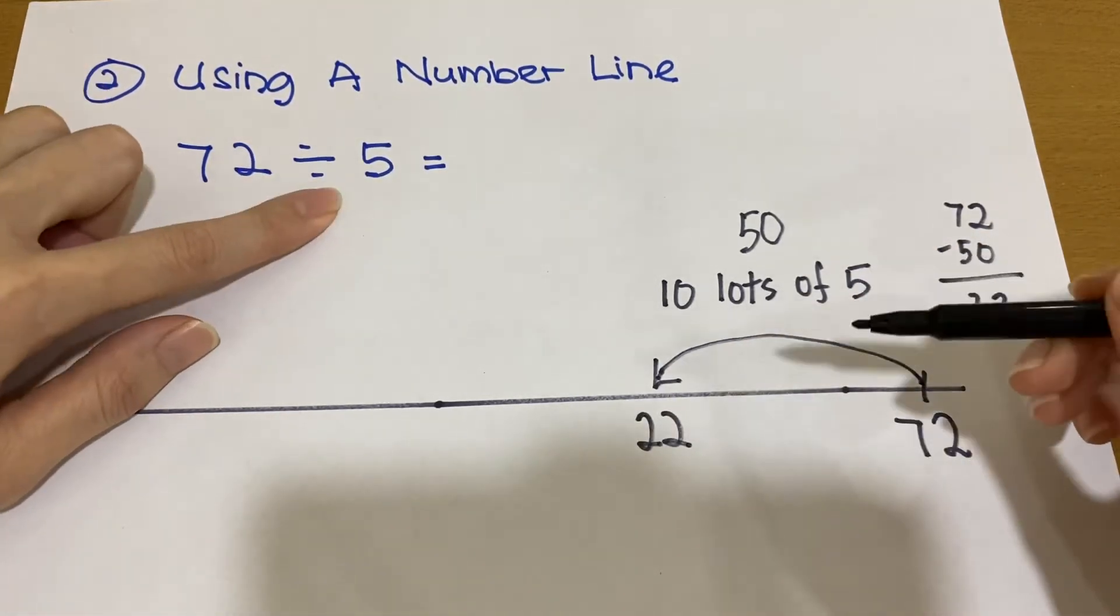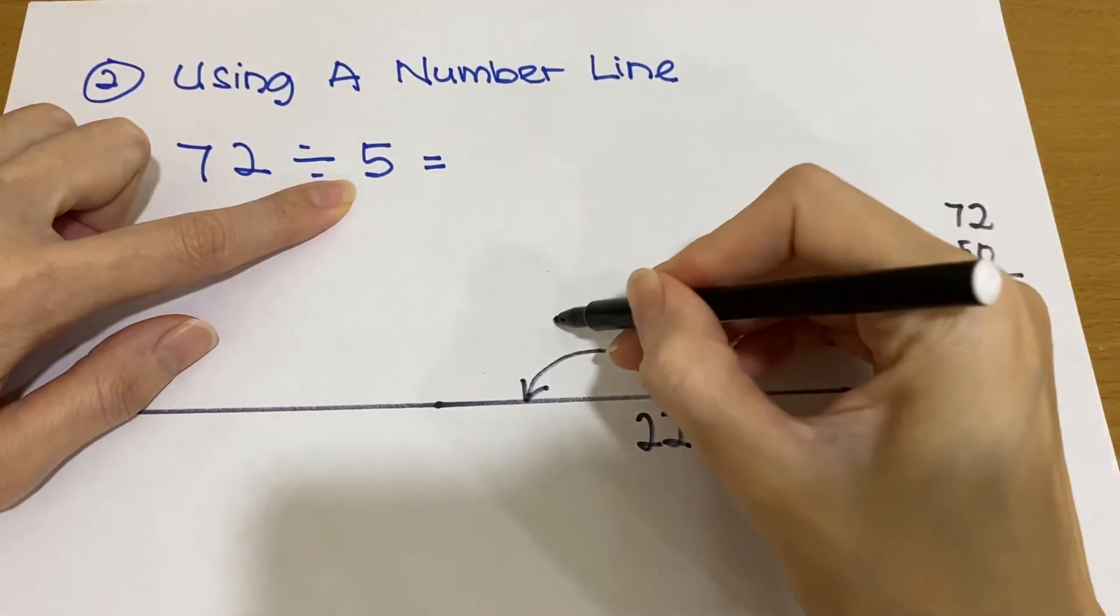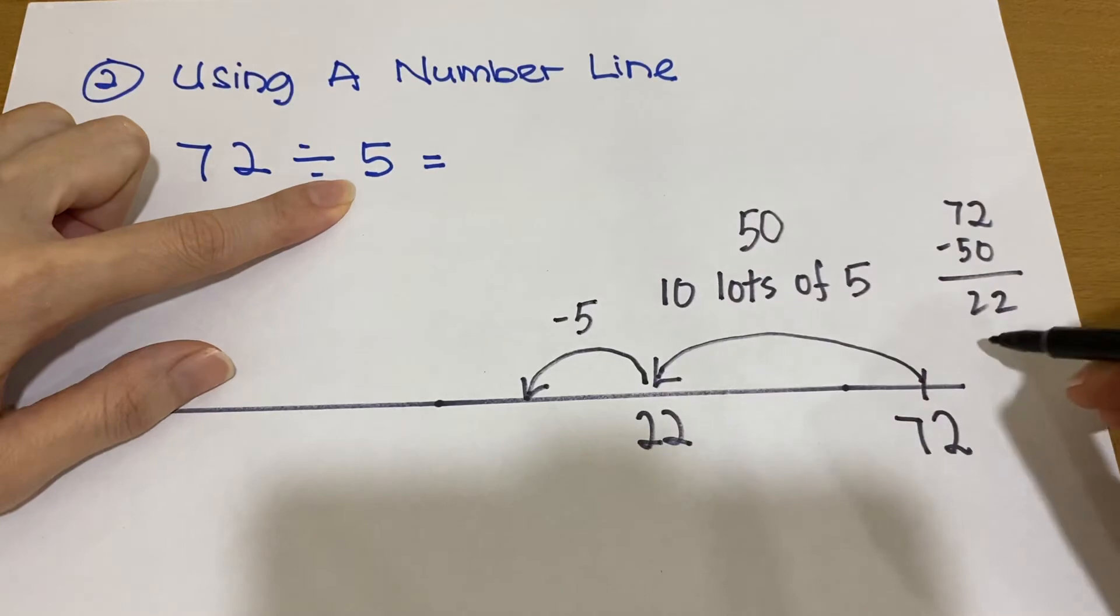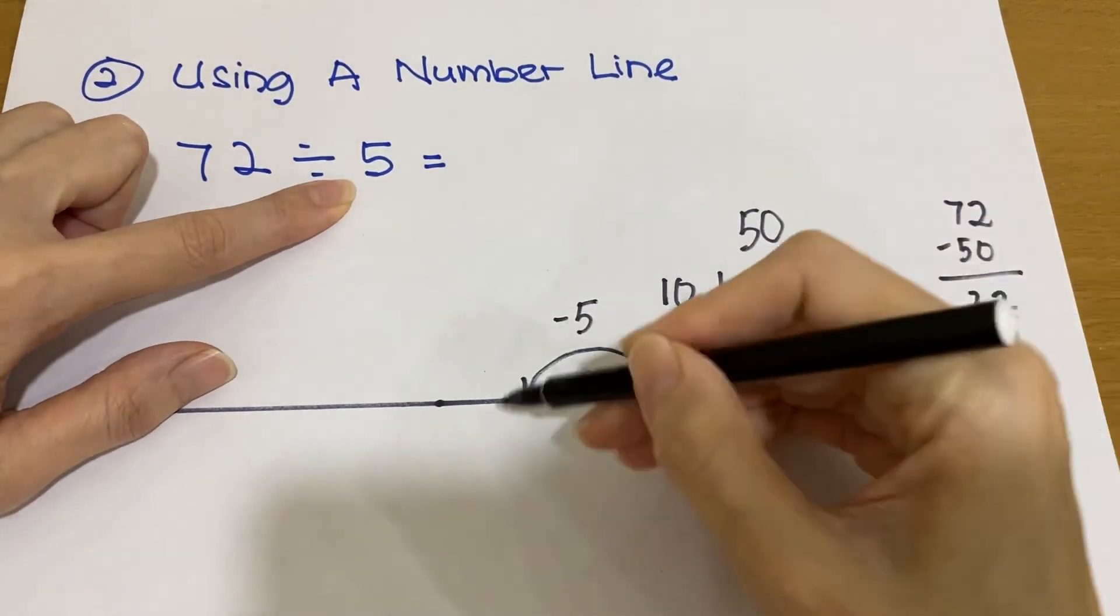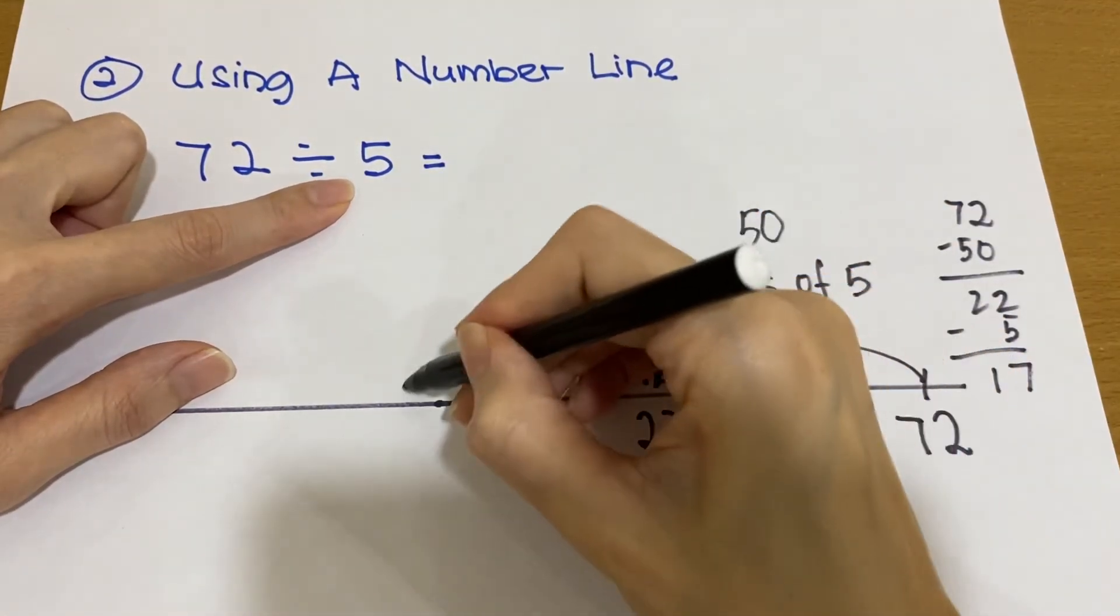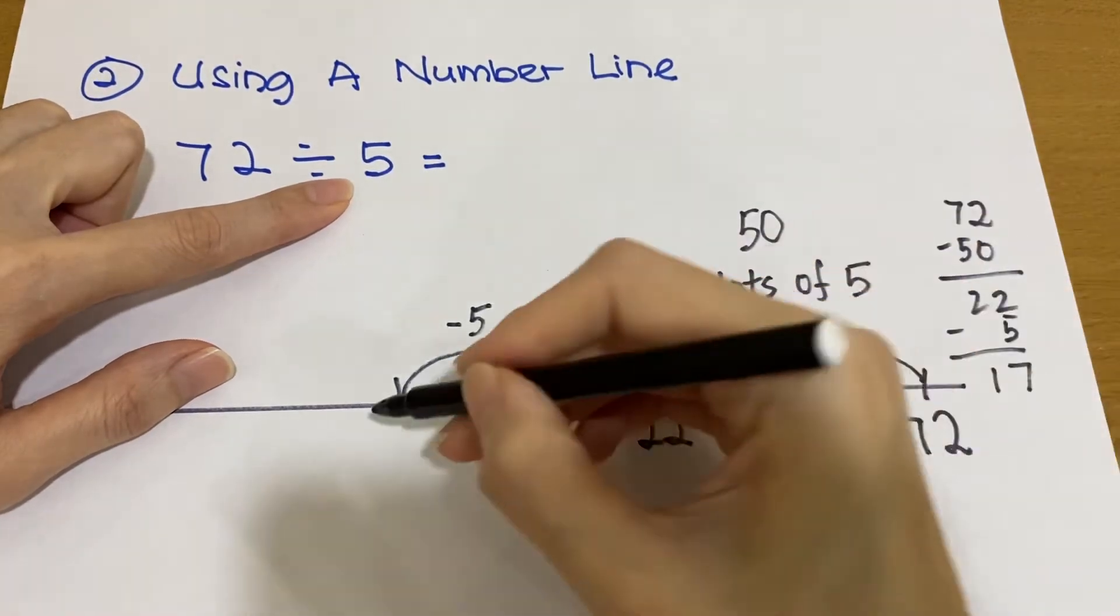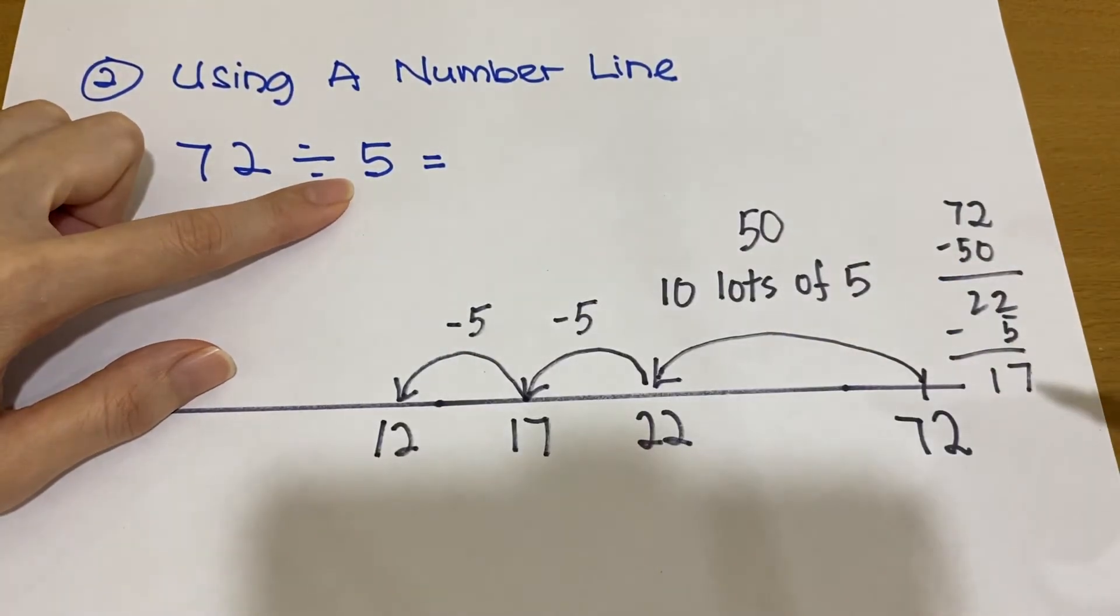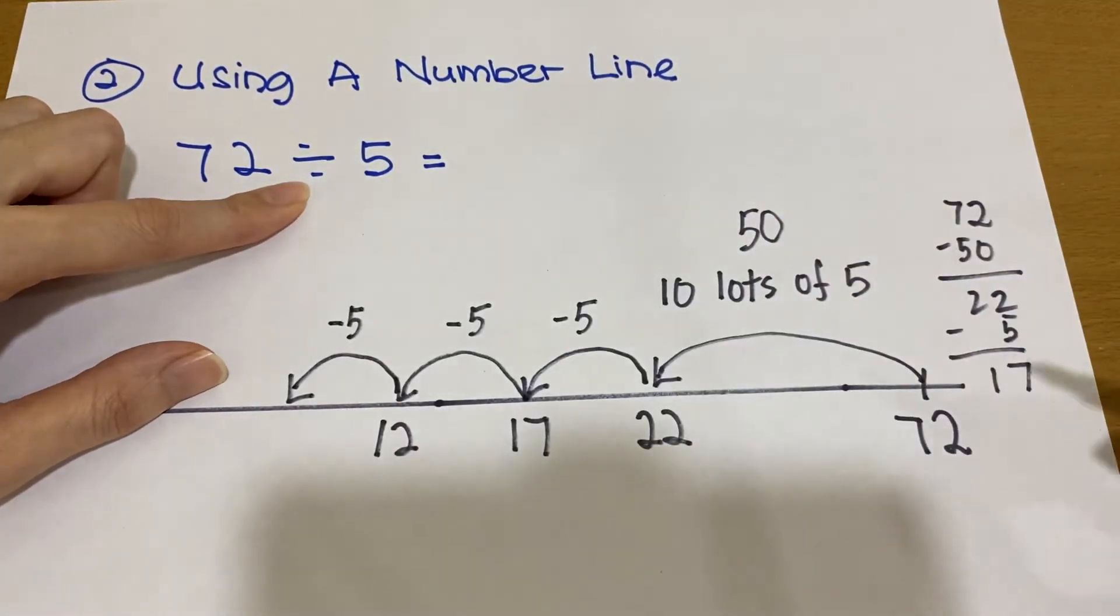From 22, we go backward 5. So 22 minus 5, we will have 17. So we stop at 17. So we are going to go backward 5 step again. 17 minus 5, we will have 12. Another 5 step backward. We will have 7.